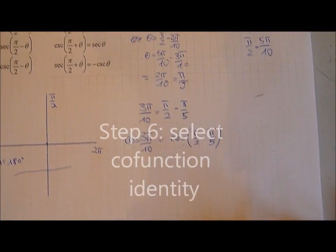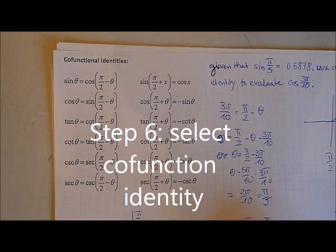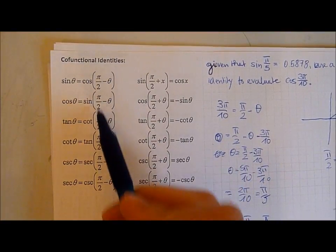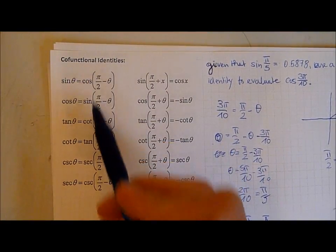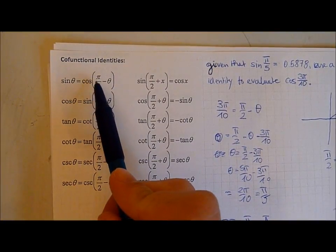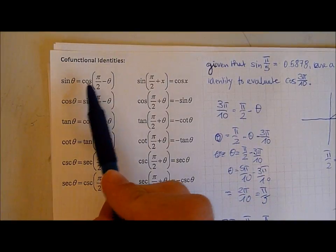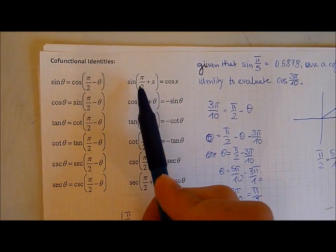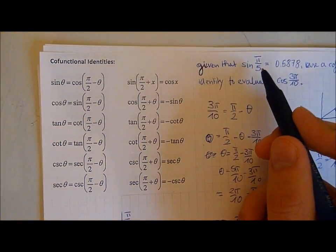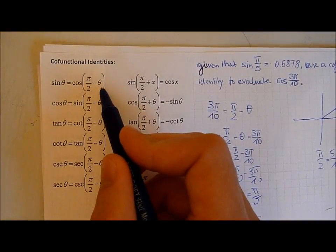Now we select the cofunction identity. Since it's in quadrant 1 we are looking for those equations that are in quadrant 1 which are the ones on this side. You can see this because it says pi over 2, 90 degrees, minus an angle is our angle. That's for quadrant 1 and quadrant 2 it's 90 degrees plus another angle. So we are looking for sine and we have cos. So we use the first one.